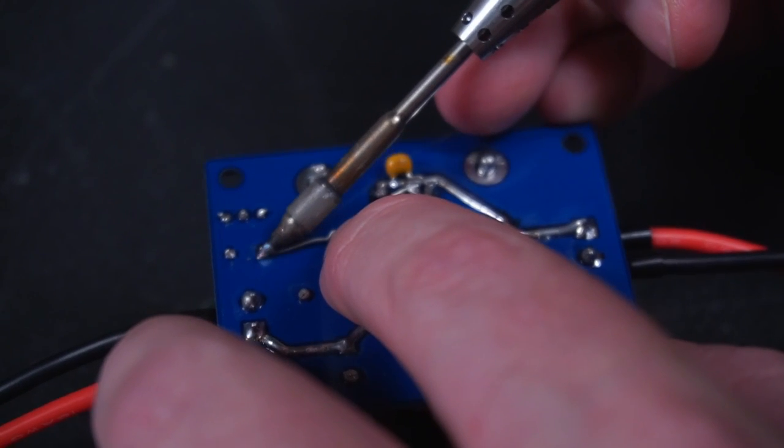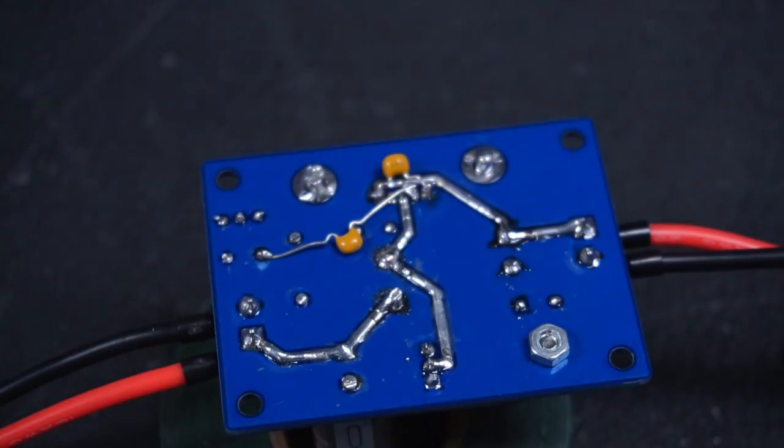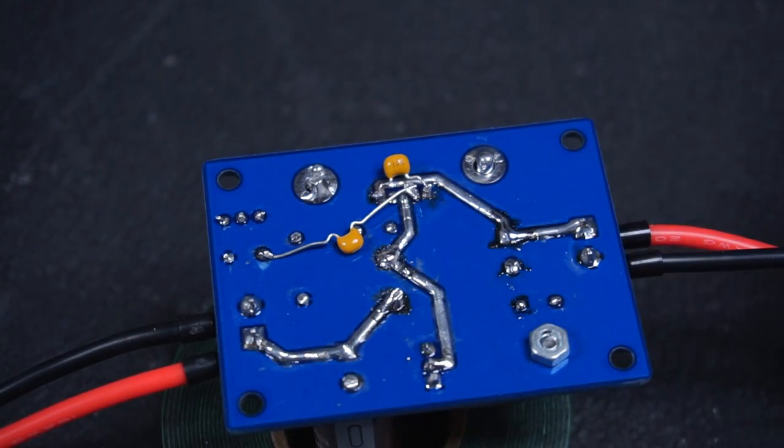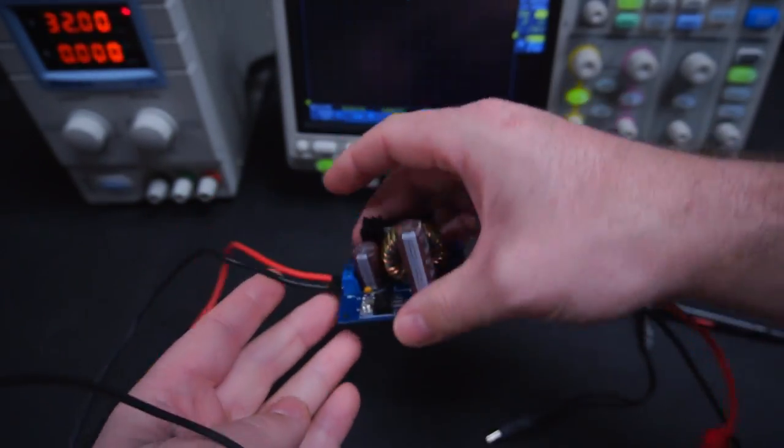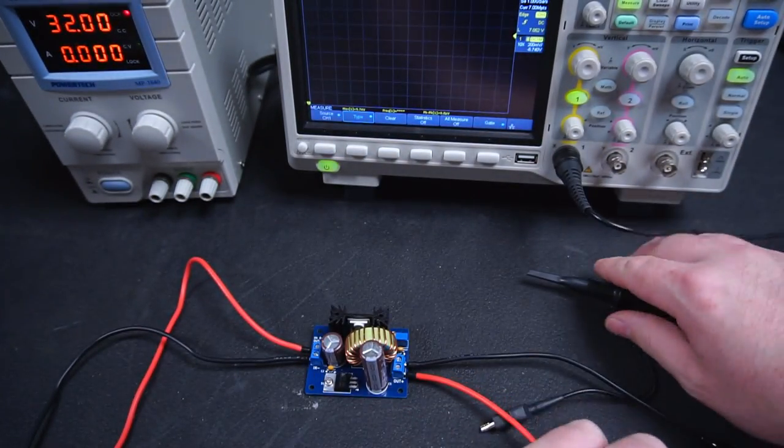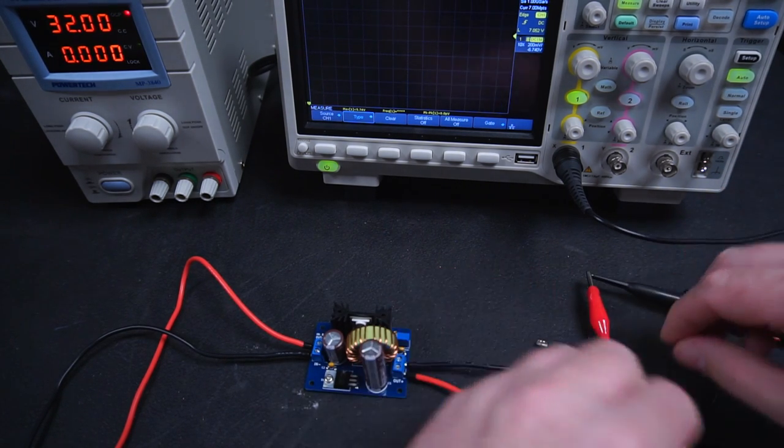I then added one more capacitor between the positive output and the feedback pin, aka pin 2. Now it's time to connect everything back up to the buck converter and see if the additional decoupling capacitors have made any improvement.